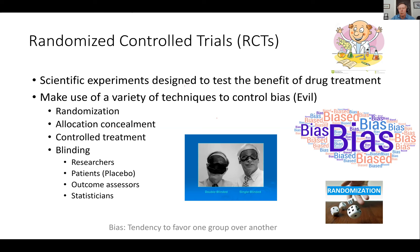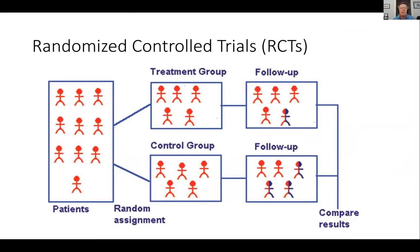This is the basic diagram of a randomized control trial. On the left, you have a group of subjects with the target disorder. They're going to be assigned randomly to either a treatment or control group. Then they're going to be followed up over time until they develop an outcome. We assess the outcome toward the end of the trial and compare the results in those two groups.